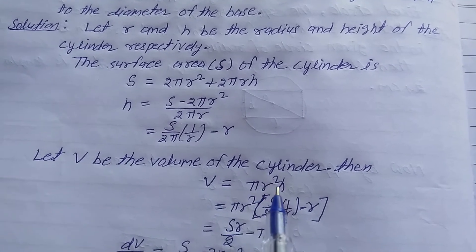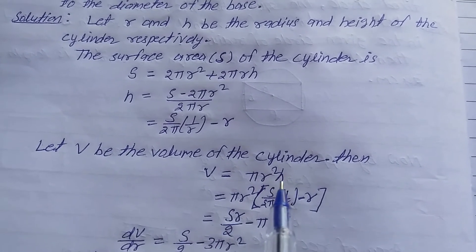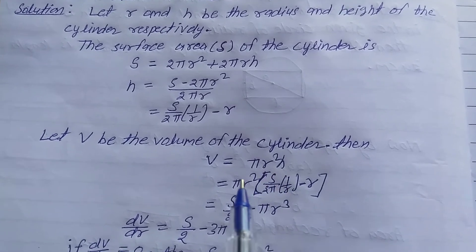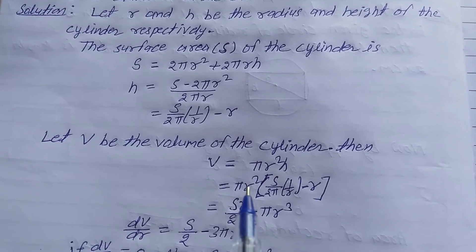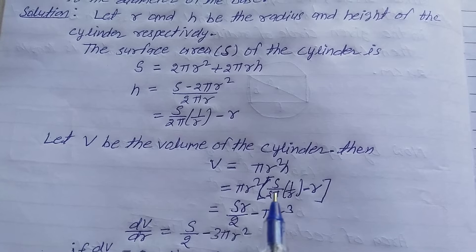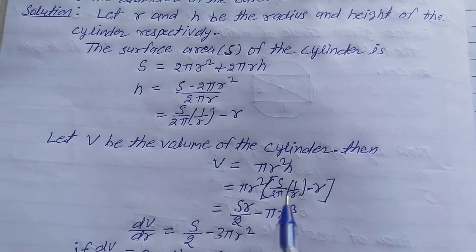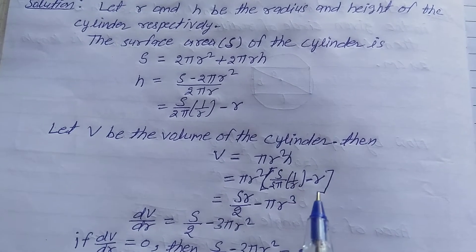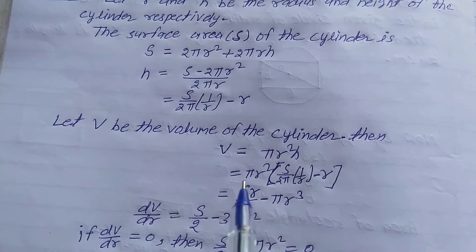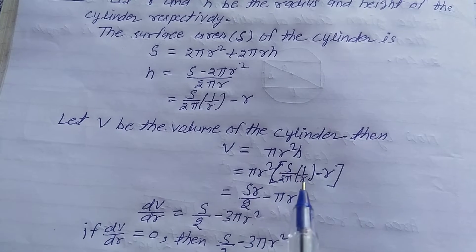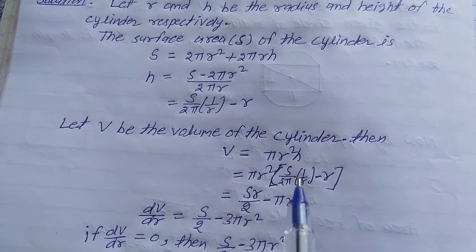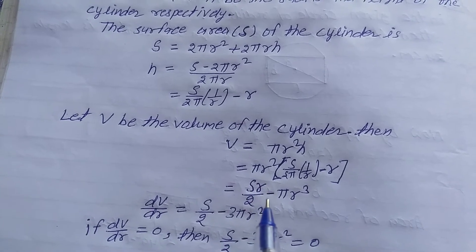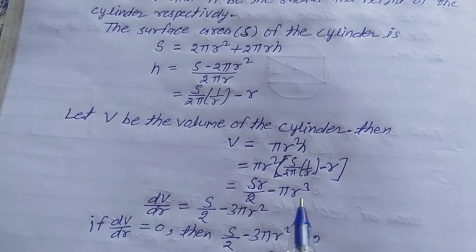Let V be the volume of the cylinder, then V = πr²h. Substituting the value of h: V = πr² × (S/2π) × (1/r − r). Multiplying through: V = Sr/2 − πr³.